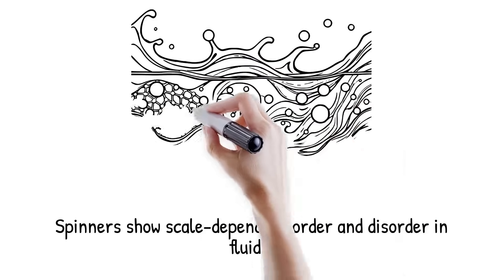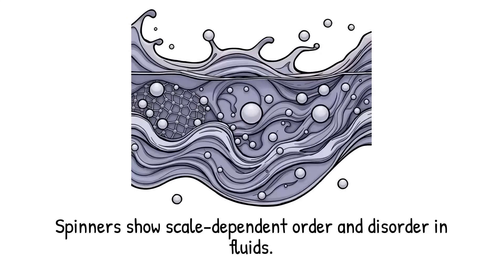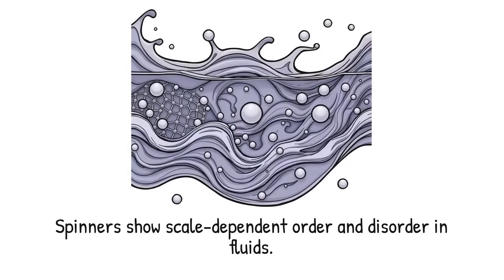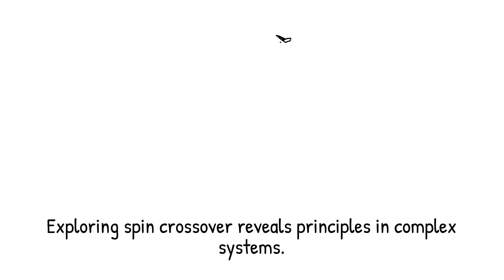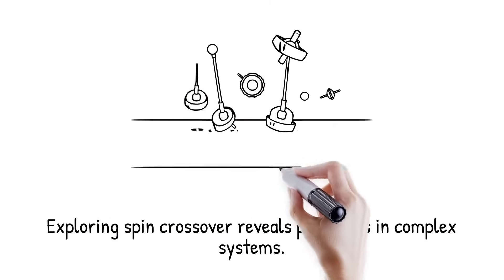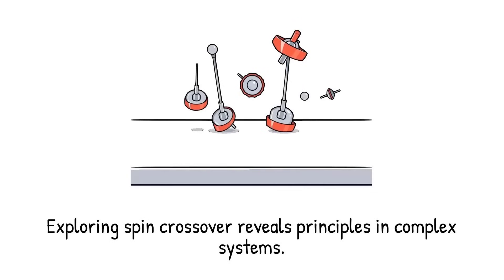Spinners thus expose the hidden boundary between order and disorder in active fluids. They show how microscale rules produce macroscale unpredictability. The crossover is both a challenge and an opportunity for science. By probing it, we can uncover universal principles governing transitions in complex systems.